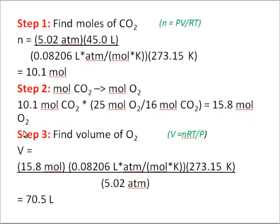We now know moles of O2. Step three is finding the volume, the thing the problem asks about, from the moles. Volume is NRT over P. So 15.8 moles of O2 is inserted into the equation, and we calculate a volume of 70.5 liters of oxygen.